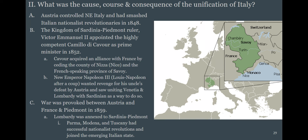Sardinia-Piedmont and France provoke a war with Austria, and Lombardy — where the richest city in Italy, Milan, is — gets annexed to the kingdom of Sardinia-Piedmont. The central Italian cities of Parma, Modena, and Tuscany, including Florence, the richest areas of the country, all join up with this emerging Italian state and make Sardinia-Piedmont much, much stronger than it would have been otherwise.